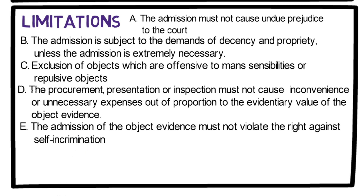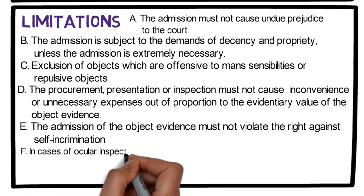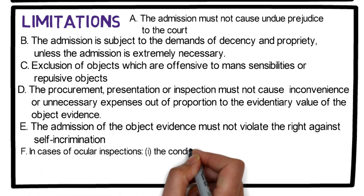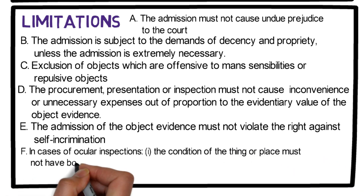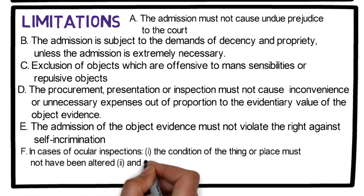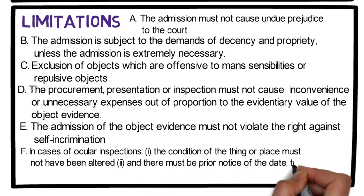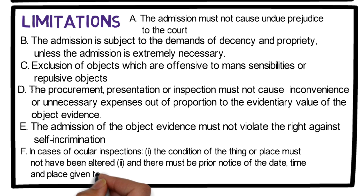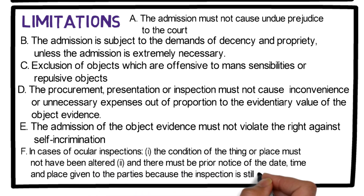Fifth limitation: the admission of the object evidence must not violate the right against self-incrimination. I had already discussed the right against self-incrimination in our previous video — I will put the link in the description box. Sixth limitation: in cases of ocular inspections, the condition of the thing or place must not have been altered, and there must be prior notice of the date, time, and place given to the parties, because the inspection is still part of the trial.